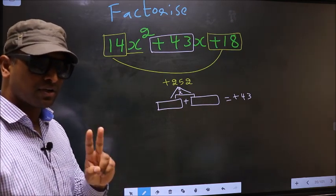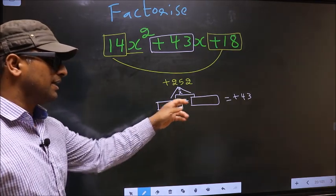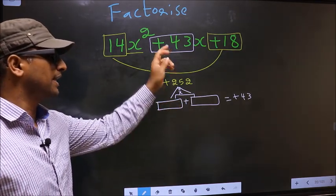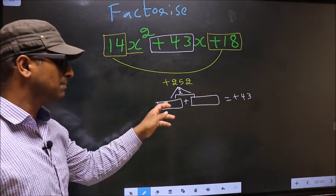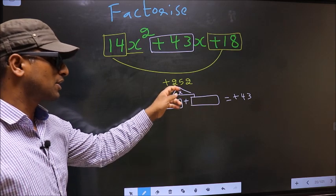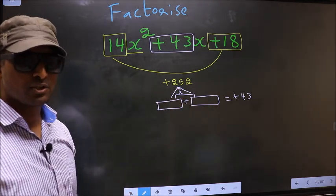I repeat: find 2 numbers that add to +43 and when multiplied give +252.